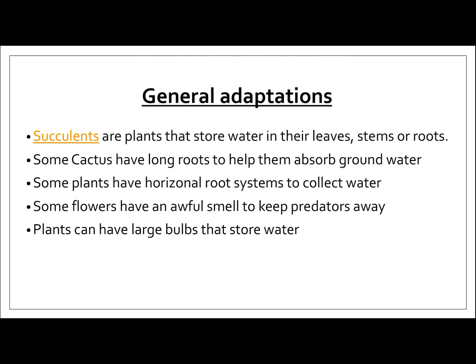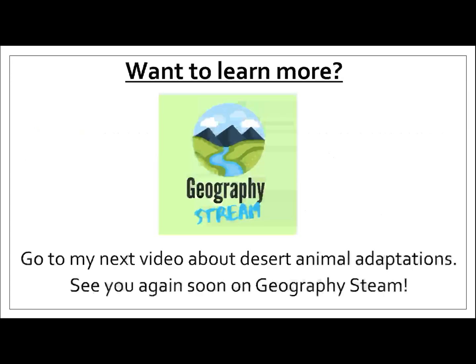To finish, here are a few general adaptations. Succulents are plants that store water in their leaves, stems, or roots. Some cacti have long roots to help them absorb groundwater. Some plants have horizontal roots close to the surface to collect water. Sunflowers have a really awful smell to keep predators away so they can survive. And finally, some plants have large bulbs that store water.